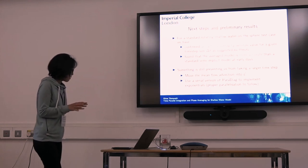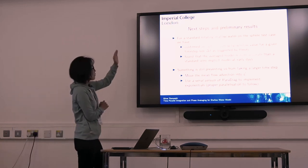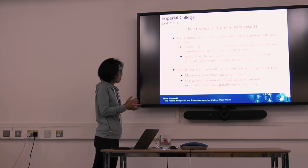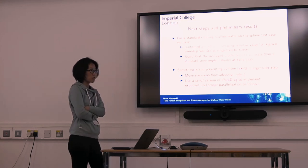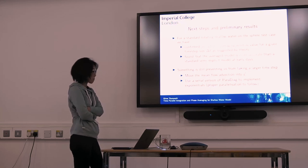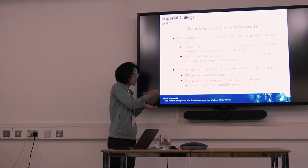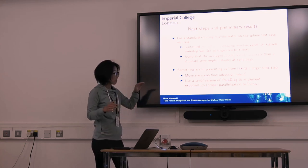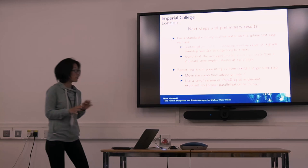Moving on to what we've done since the paper: we confirmed an optimal averaging window in the model and found the averaged model is accurate at early days, but we couldn't push the Δt limit beyond about 900 seconds. To investigate, we moved mean-flow advection into L — in case a fast mean flow was breaching the CFL condition — and also used the PARADIAG method, though the parallel version isn't quite ready for this application yet.